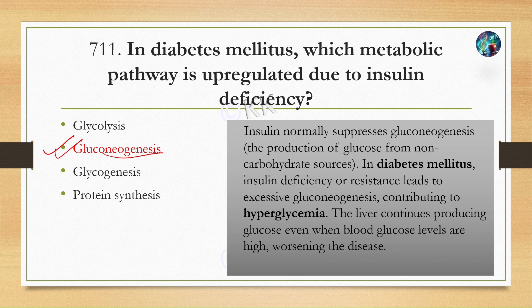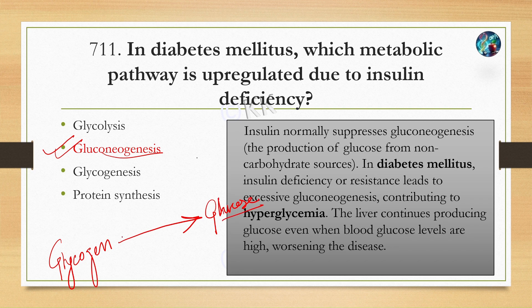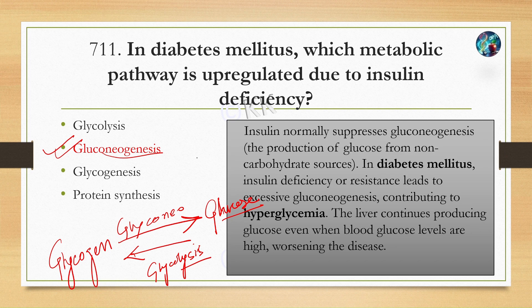Gluconeogenesis occurs when free sugar is not available as an energy source in the body. In diabetes, due to insulin deficiency and insulin resistance, we see excessive gluconeogenesis, contributing to hyperglycemia, where the liver continuously produces glucose, worsening the condition of diabetes mellitus.